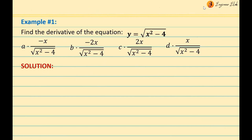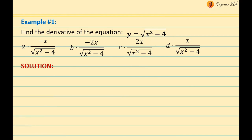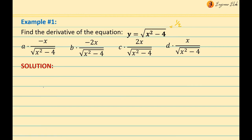Find the derivative of the equation y equals the square root of x squared minus 4. The first thing to do is familiarize yourself with the form of the equation. As you can see, it's an algebraic function — x squared minus 4 — inside a square root. We know that a square root can be rewritten as a power of one-half, so we rewrite the given as y equals (x squared minus 4) raised to one-half.